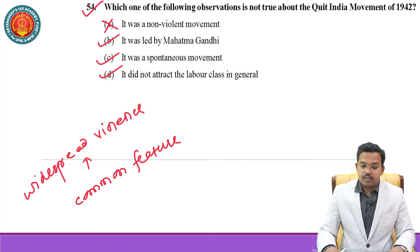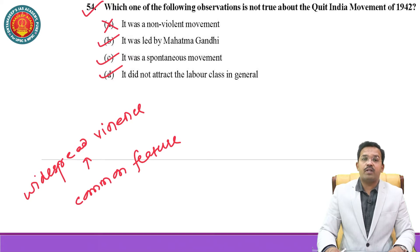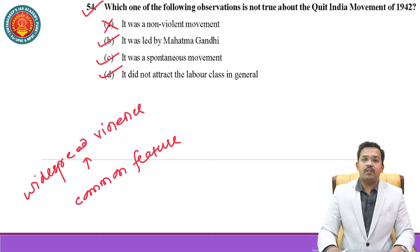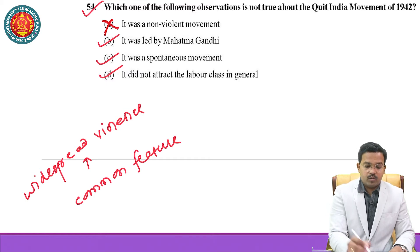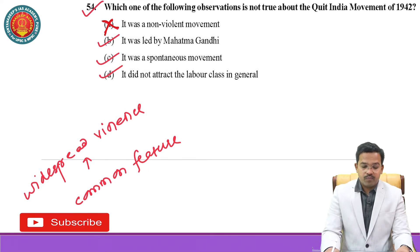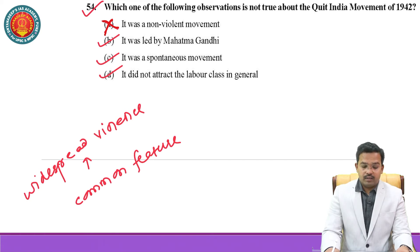Which one of the following observations is not true about the Quit India Movement of 1942? The first option says it was a non-violent movement — this is the blender statement. The Quit India Movement was marred by widespread violence. Widespread violence was a common feature of the Quit India Movement. The movement was led by Mahatma Gandhi. When searching for a blender statement, look for the one that does not fit the context.